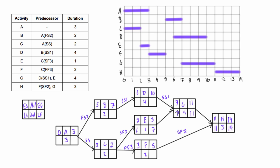Looking at activity D, this is a start-start relationship with a lag of one, so G can start one day after D starts. That applies to the late start as well. G's late start is seven, and it starts one day after D, so we subtract one and put six in for D's late start, then add the duration to get a late finish of ten. Similarly for activity B - another start-start relationship with a lag of one. We take G's start, subtract one, and put five in for B's late start. Five plus two is seven for the late finish.